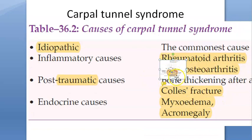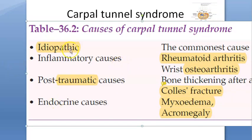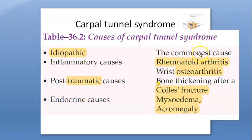The most common cause is idiopathic — they don't know why. Then it can be rheumatoid arthritis, which is autoimmune, then osteoarthritis of the wrist, which is inflammatory. Trauma such as Smith's fracture can cause carpal tunnel syndrome, and Colles' fracture can cause later bone thickening which leads to carpal tunnel syndrome.